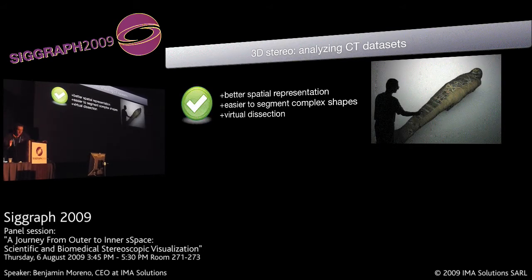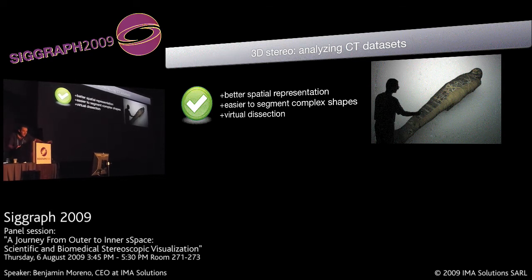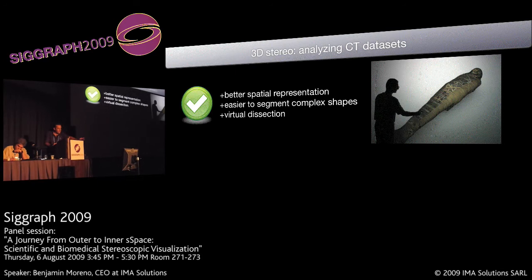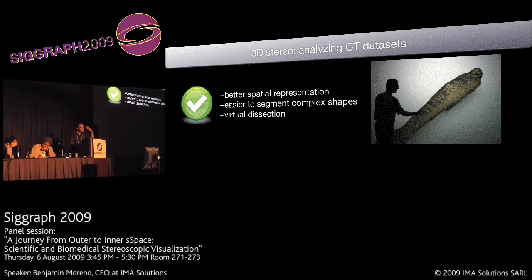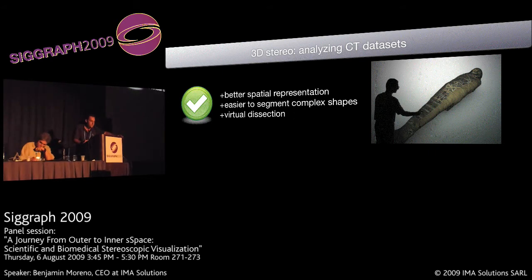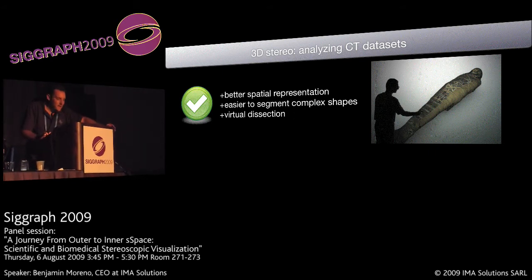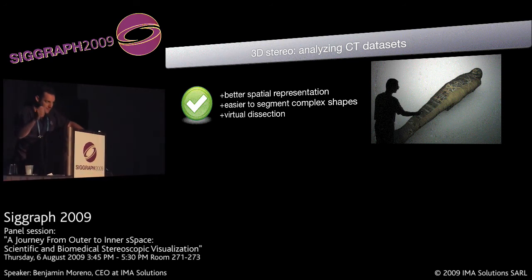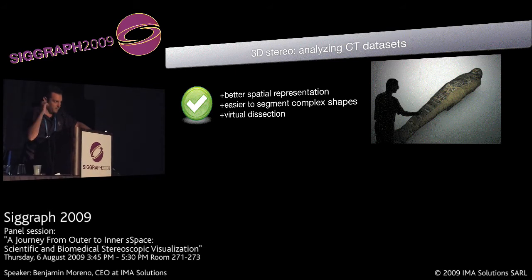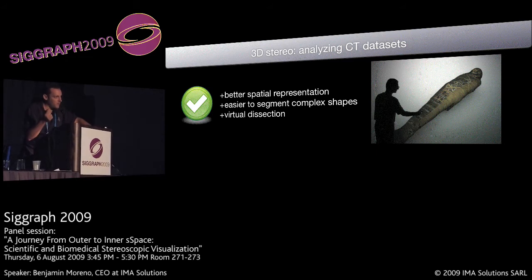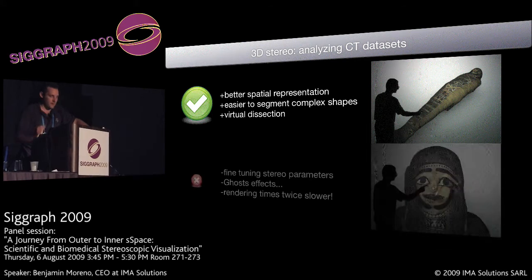For us, we can use stereo at two levels. The first one is for analyzing CT scan datasets, so we get a better spatial representation and it's easier for us to segment complex shapes. And if you also use haptic devices — force feedback haptic devices — with stereoscopy, you are not far from being able to say you're working on a virtual dissection system or virtual autopsy system. So that's a good point.